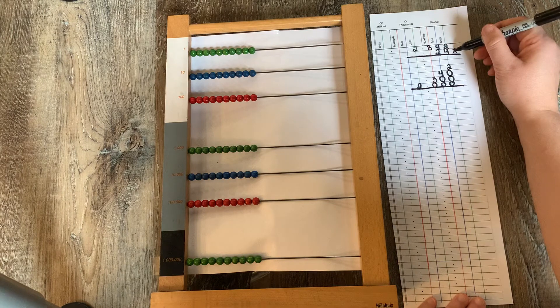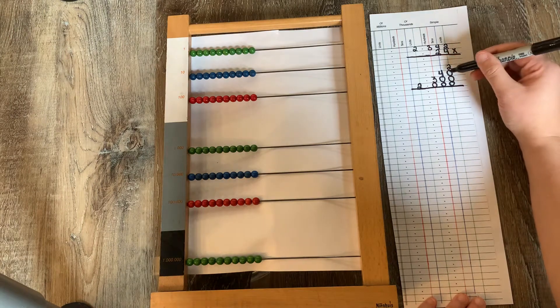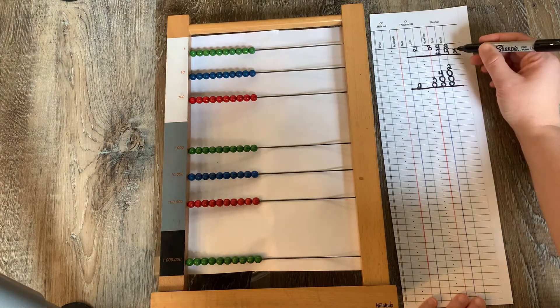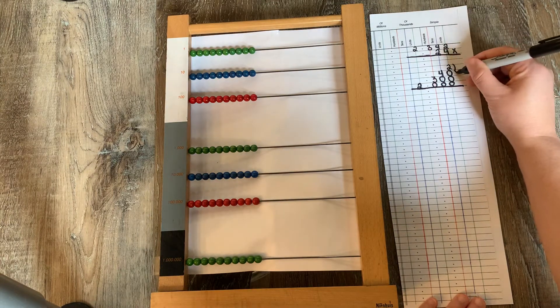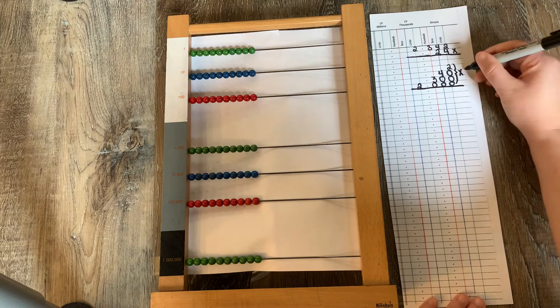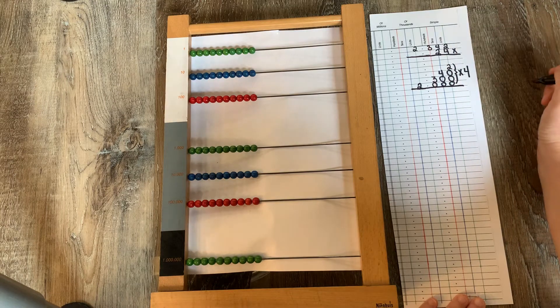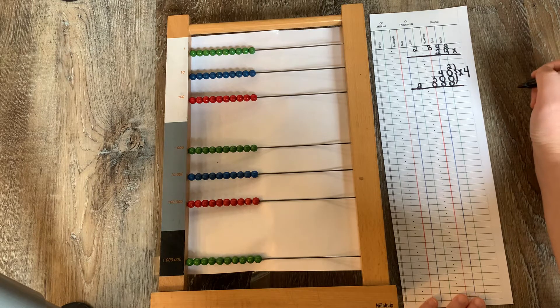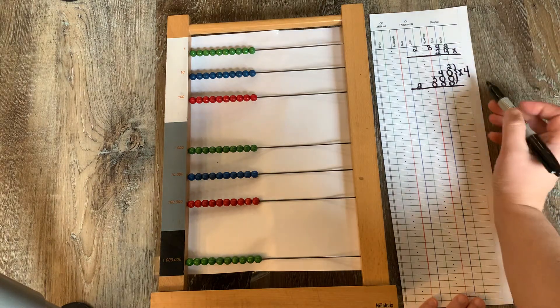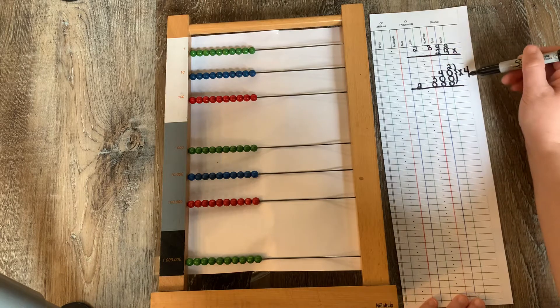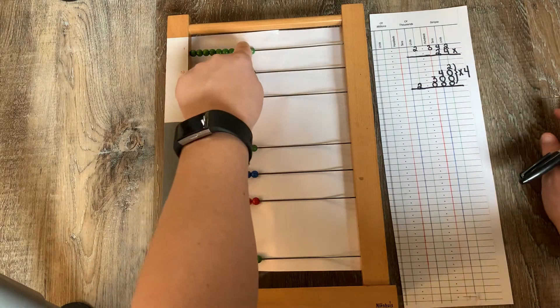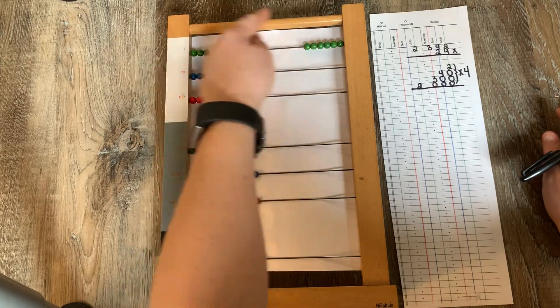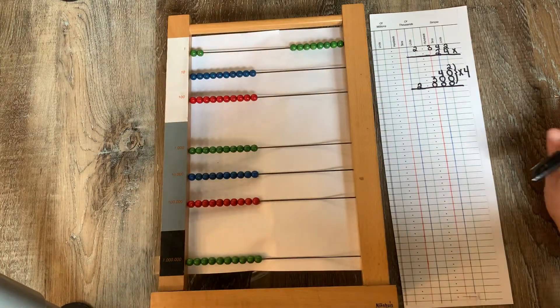Now I'm going to take this decomposed multiplicand and multiply it four times. Let's do that. So what is two units taken four times? Well, let's do that. Two units taken one time, two times, three times, four times - eight.